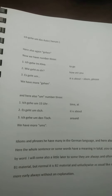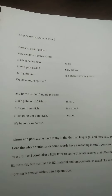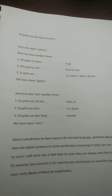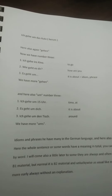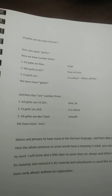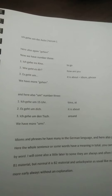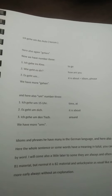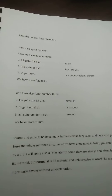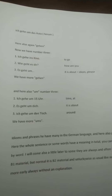Now 'um' also has three uses at the moment. Number 1: ich gehe um 15 Uhr — here 'um' is used for time. 'Um' is for time of day, and 'im' is for months. Number 2: es geht um dich — it's about you.